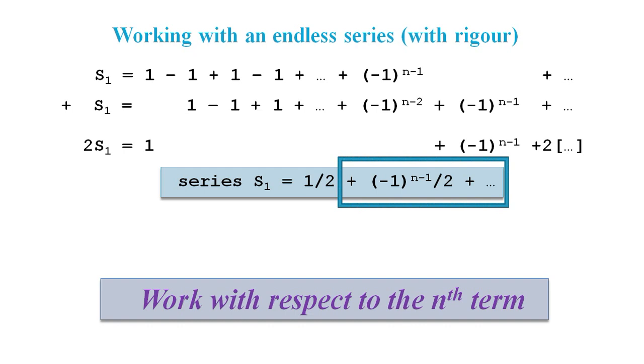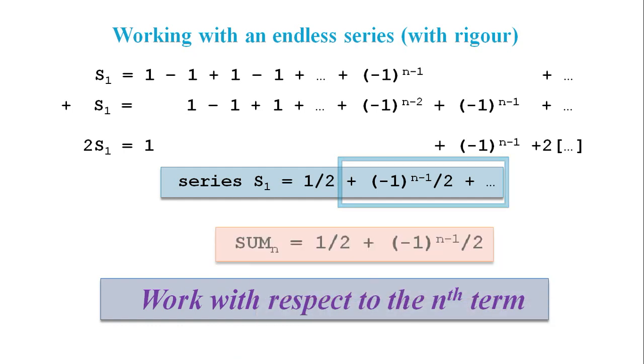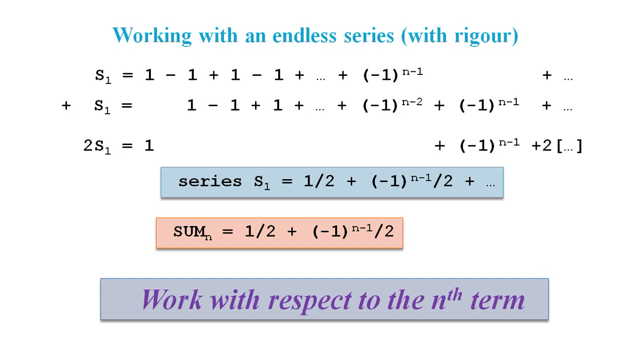If you use a less rigorous method, you might end up losing the end part of this result and be left with s1 equals a half. But if you end up with an endless series being equal to a fixed value, then you've made a mistake. Now if we drop the endless part, we find we've found an expression for the sum to the nth term. We have derived the partial sum expression. The fixed part of this expression would be called the limit if we had a converging series, but with a diverging series like this one, the fixed part is what remains after this diverging part is removed.